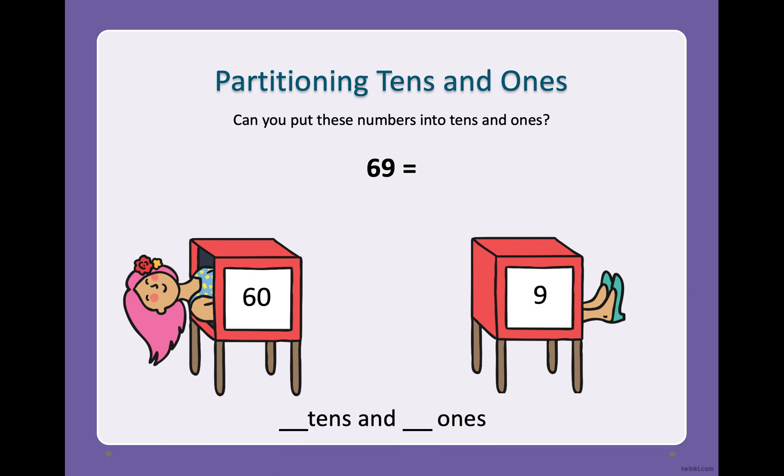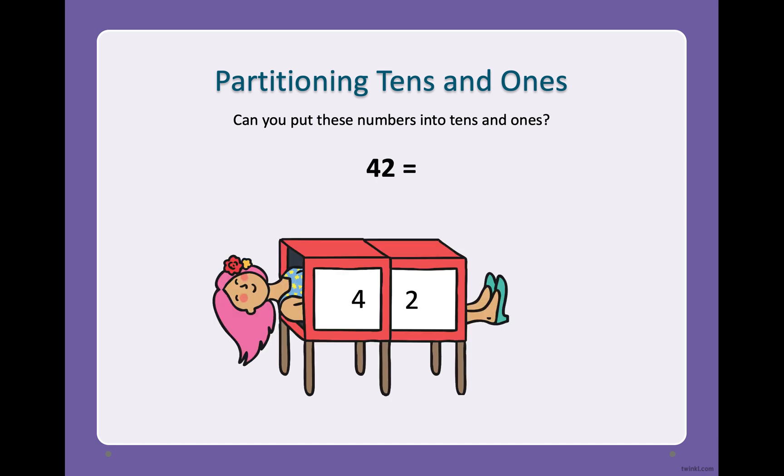Okay so we need to see how many tens and how many ones. Okay so here 60 is six groups of tens and nine is nine ones. Okay if you've got that, awesome.